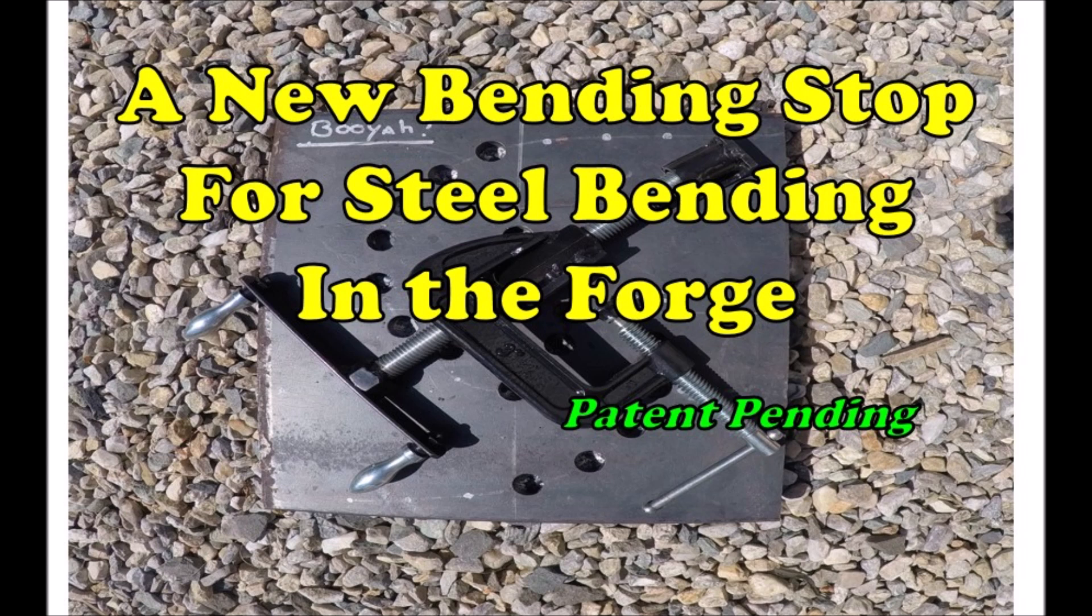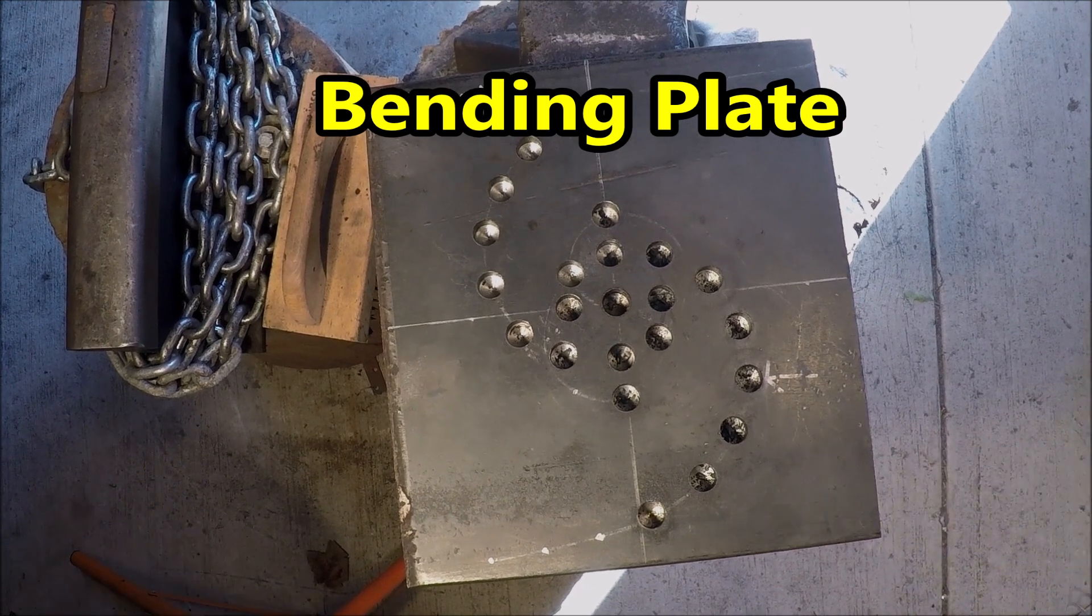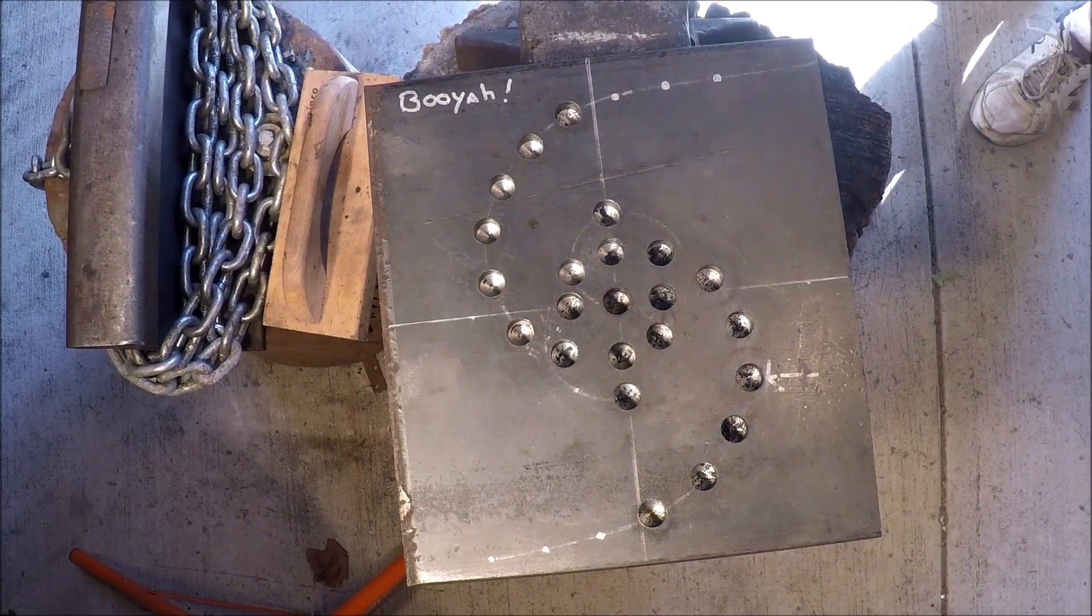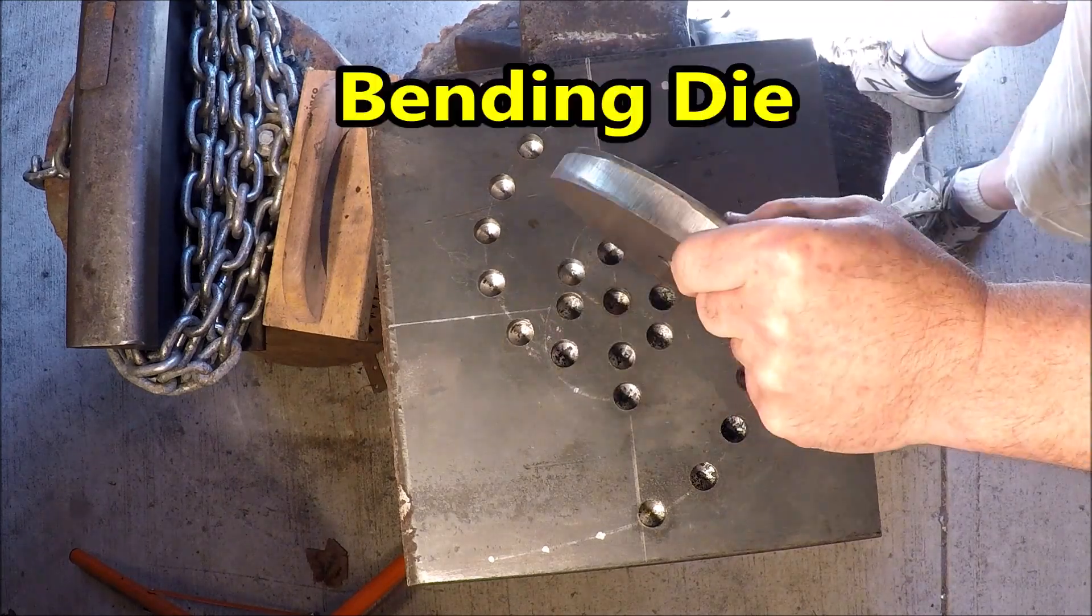Let's get started. First up is the bending plate. This is a three-quarter inch thick bending plate with five-eighths inch drilled holes.